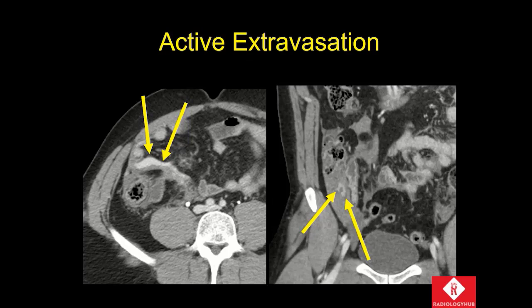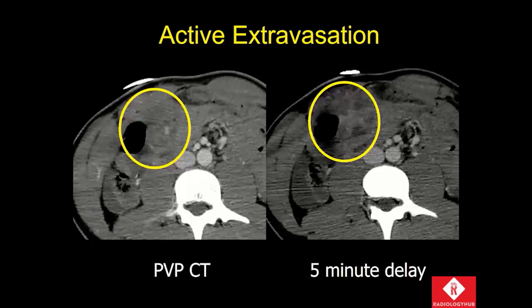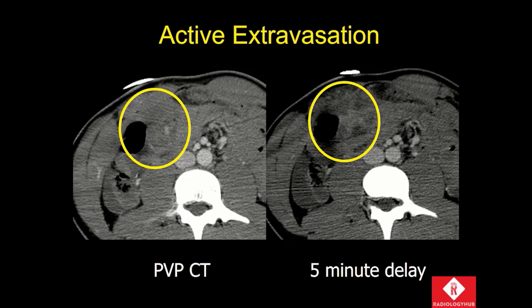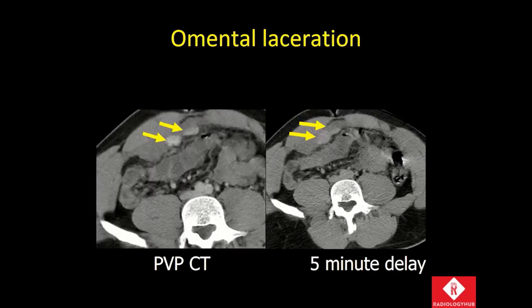Active extravasation of contrast into the mesentery is not a common finding. This is one case where there is very significant accumulation of contrast-enhanced blood in the right lower quadrant — this patient obviously required an intervention. We also use the 5-minute delayed scans to further characterize bleeds in the mesentery. On the portal venous phase CT there is a subtle but real blush of contrast in the mesentery; the delayed scan shows that blush has enlarged, with density slightly higher than circulating blood, and the amount of hemoperitoneum has increased. This patient, who was actively bleeding, was treated with embolization and no surgical resection was required.